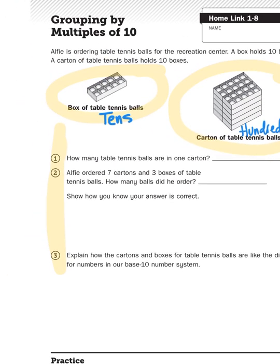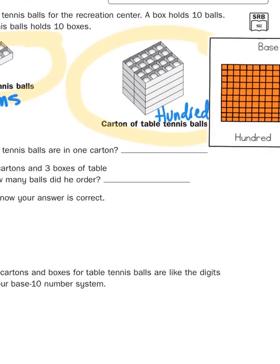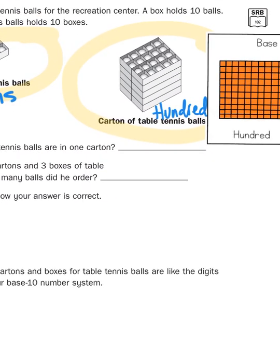How many table tennis balls are in one carton? Well, if there are 10 balls in one box, and there's 10 boxes in a carton, 10 times 10 is 100. Like so. Okay, let's continue.